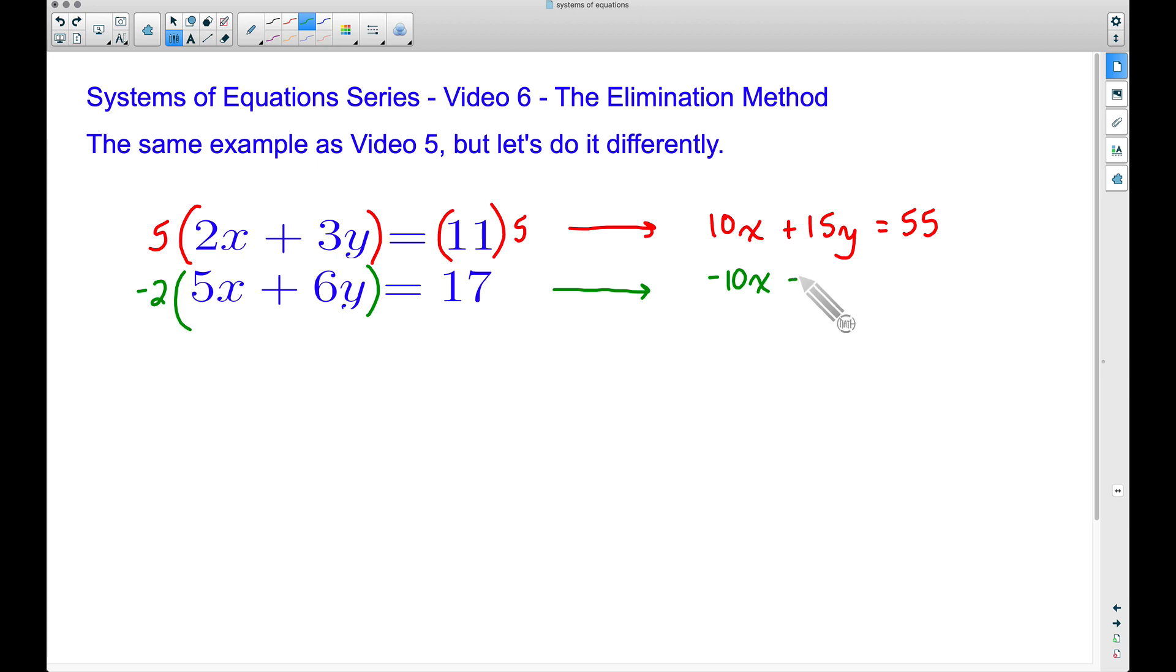Negative 2 times 6y, that's negative 12y. Watch your signs there. And then we need to multiply this side by negative 2 as well. This is multiplication by the way, not subtraction. And 17 times a negative 2 is negative 34.